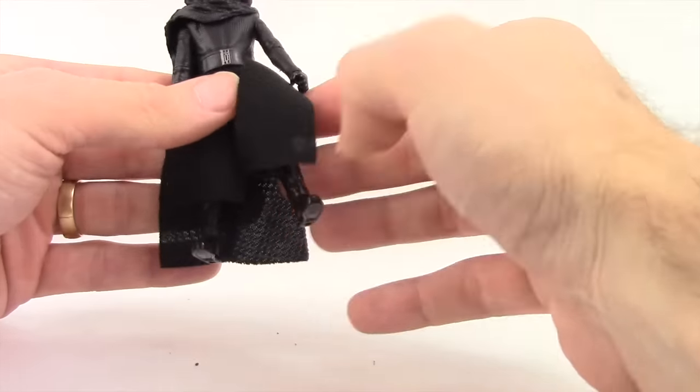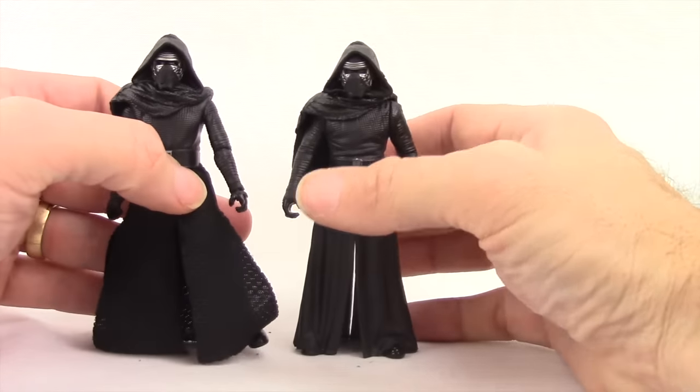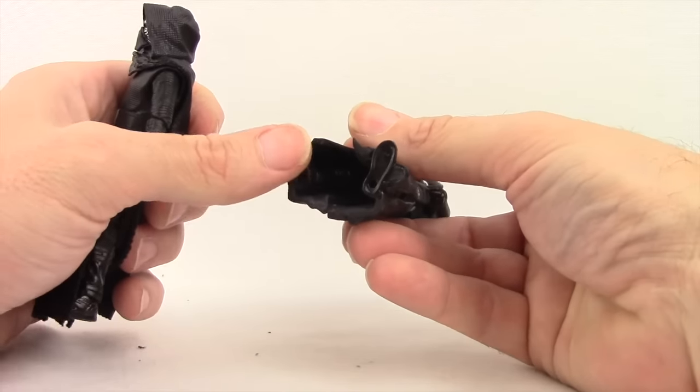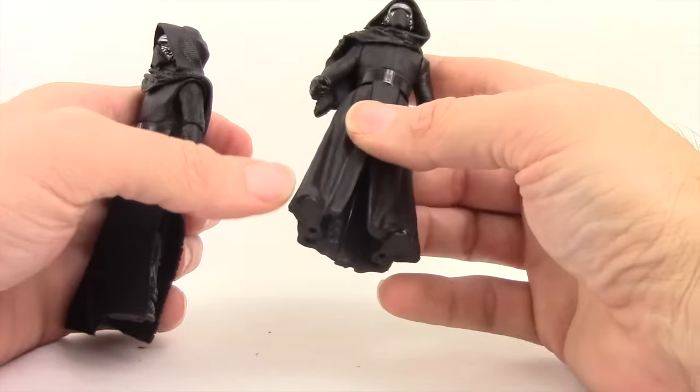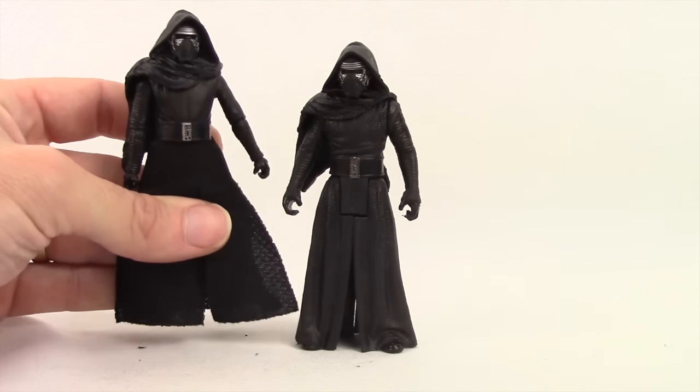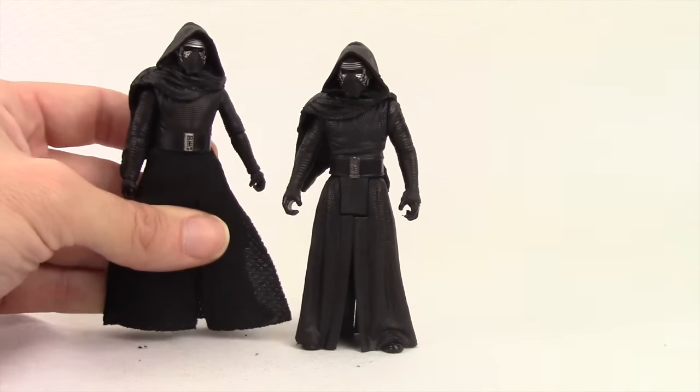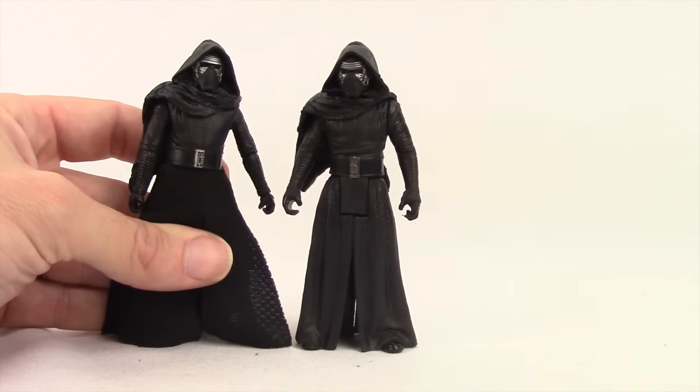I also just want to point out that this figure doesn't stand that great. Actually the five points of articulated version, because basically the feet are kind of a solid piece with the skirt piece, stands much better than this Black Series version. You may need to get a figure stand if you want to keep your Black Series version standing on your shelf.